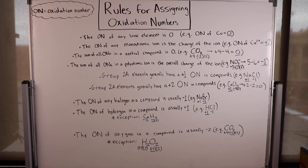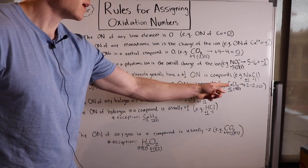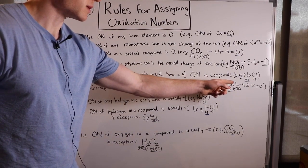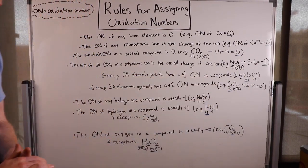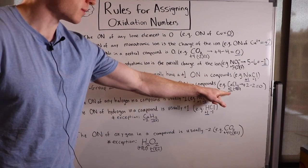Group 2A elements generally have a plus two oxidation number in compounds. An example of a group 2A element in a compound would be calcium in calcium chloride, and it has a plus two oxidation number.